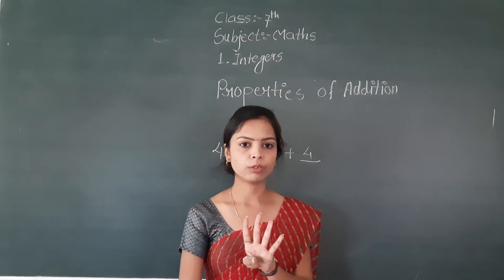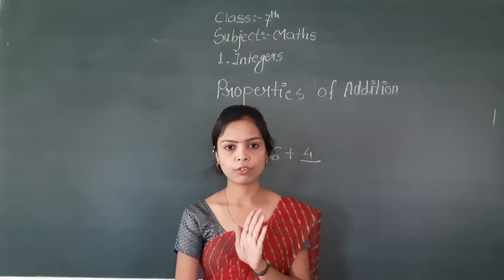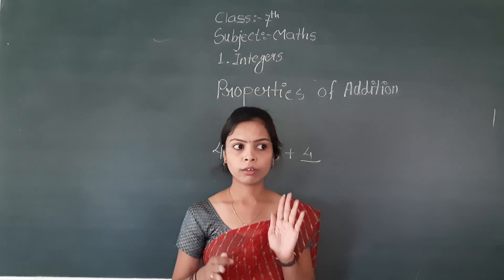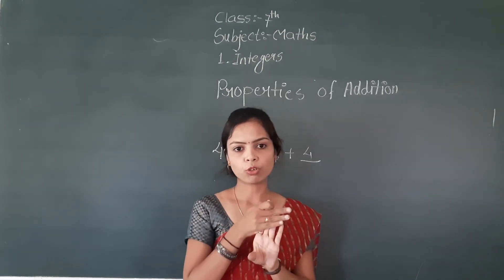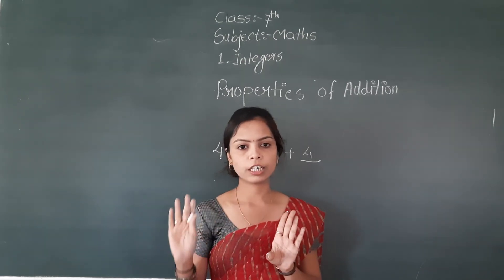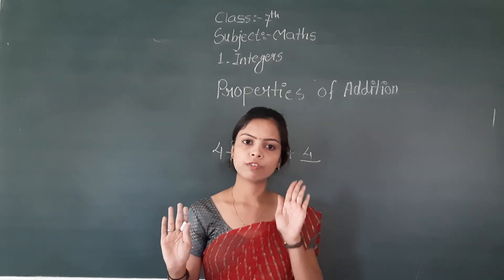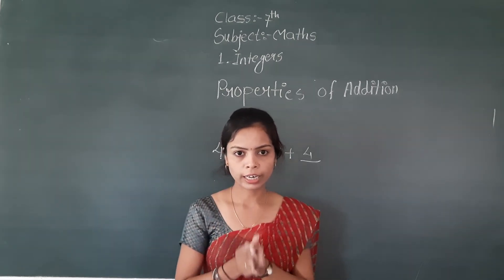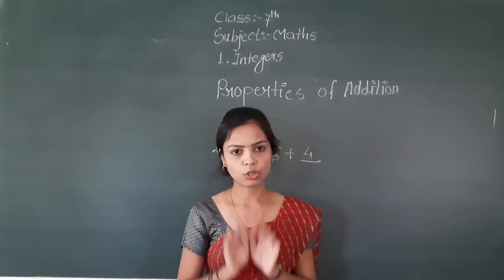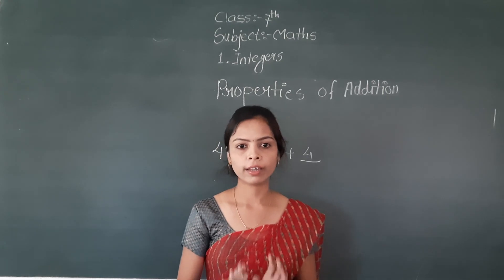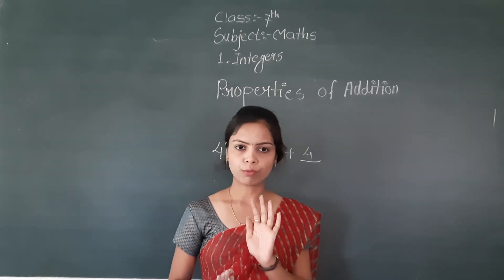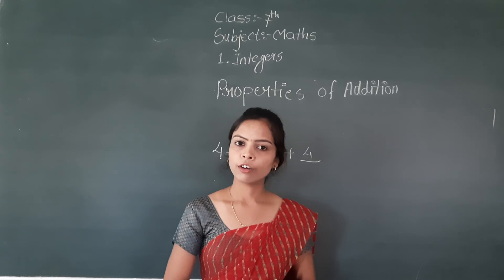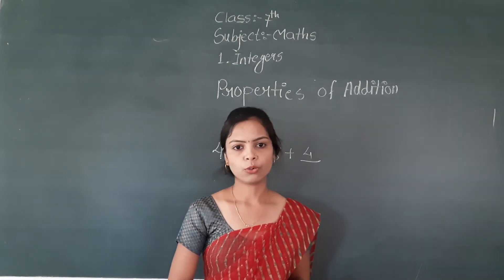Fifth property is additive inverse: the additive inverse of a positive integer is a negative integer, and the additive inverse of a negative integer is a positive integer. The additive inverse of zero is zero itself. This is your fifth property. For today's lecture, we will continue in the next class. Okay, bye.